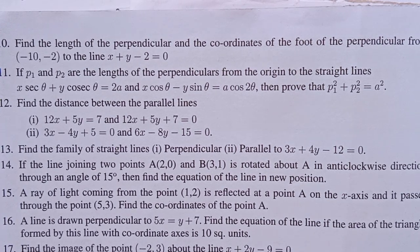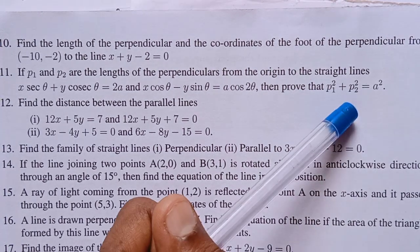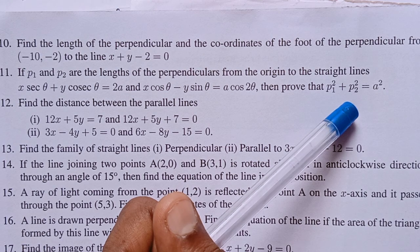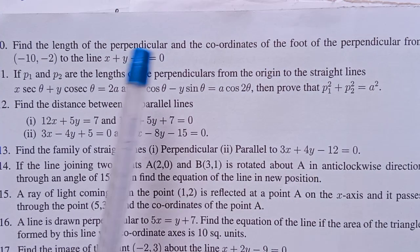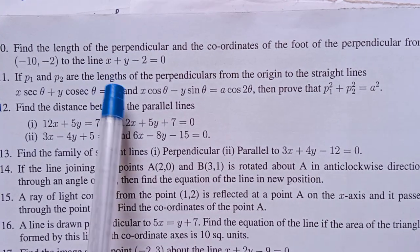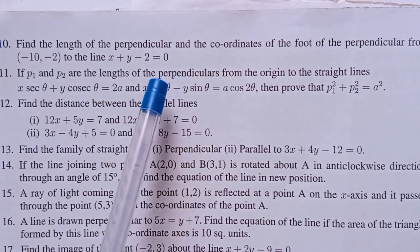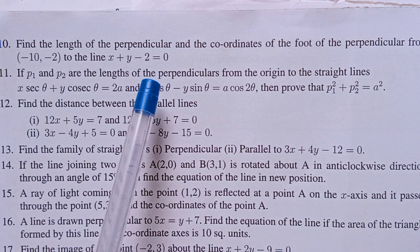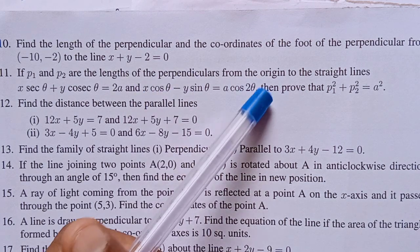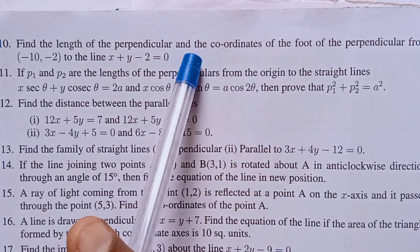For the proof, we are given two straight lines, and the perpendicular distances from the origin to these two straight lines are P1 and P2.